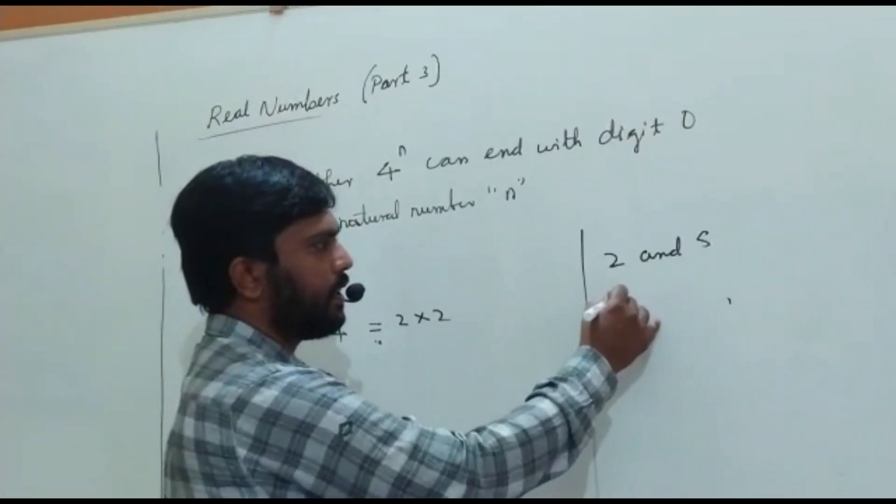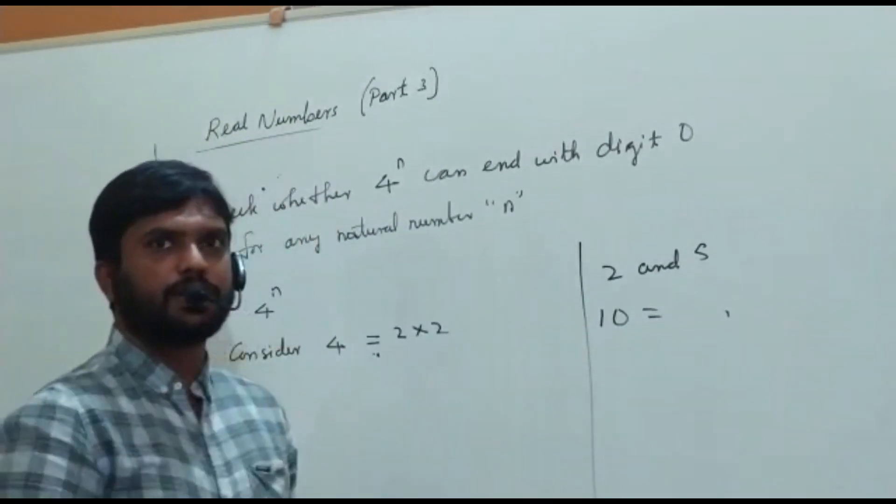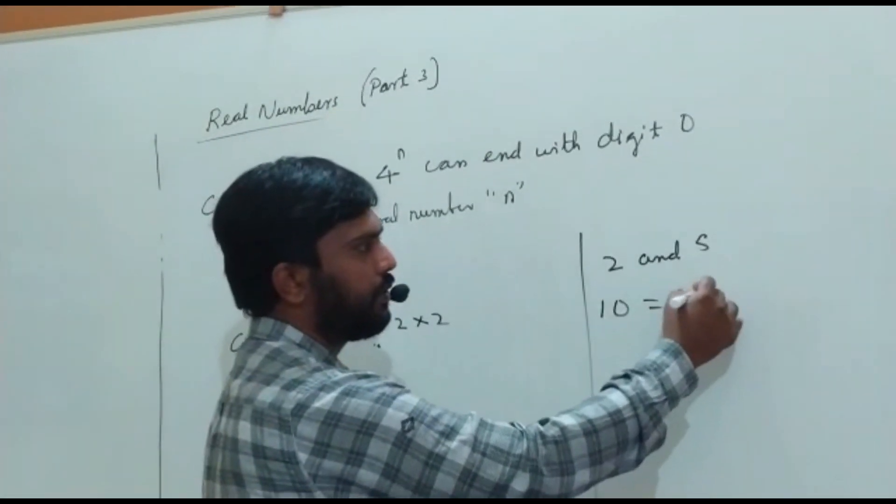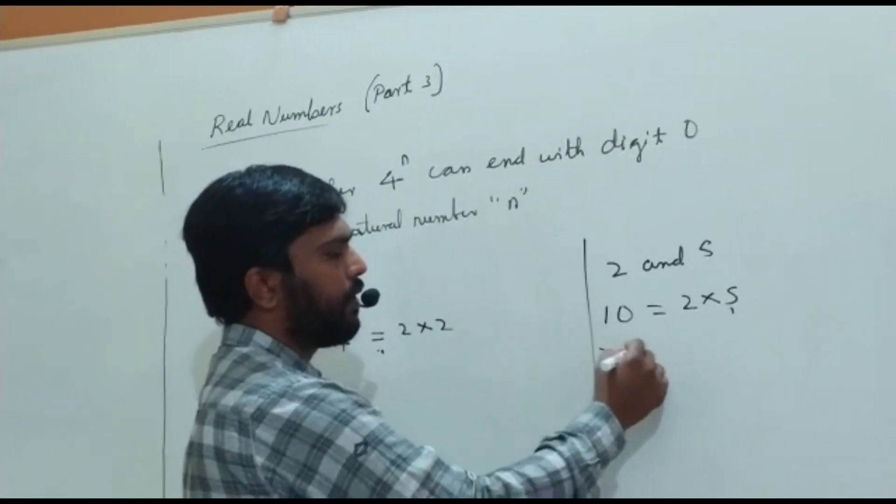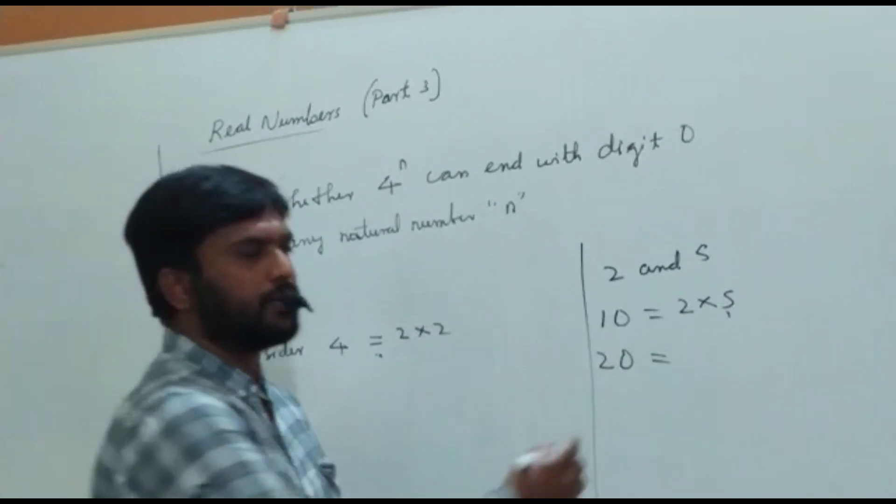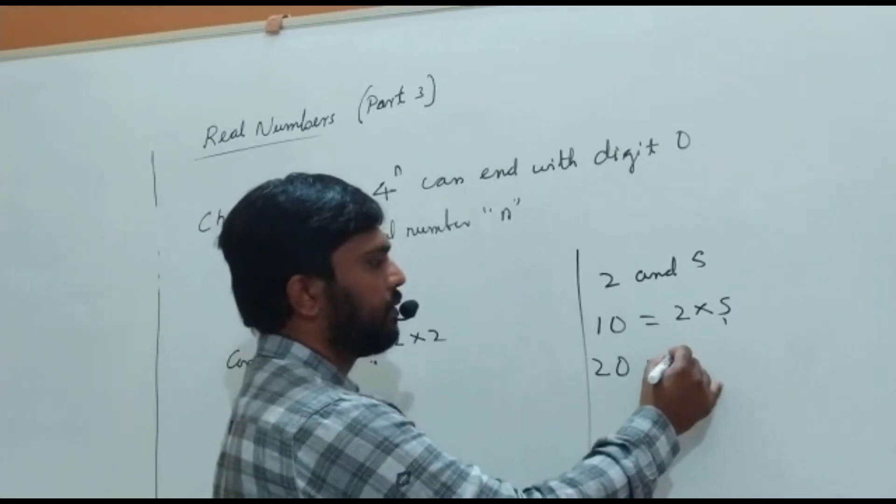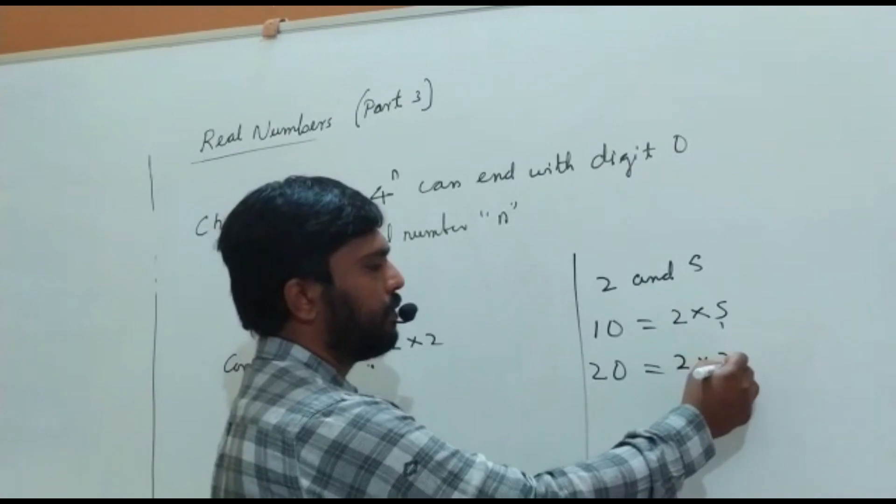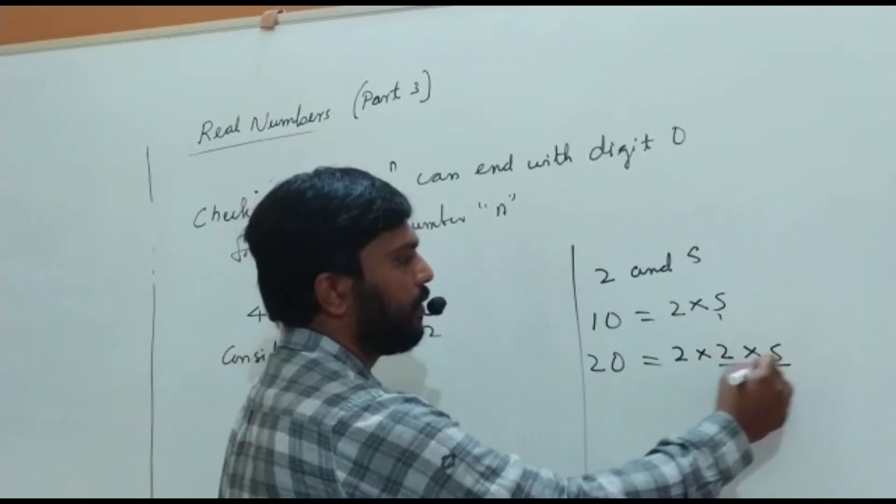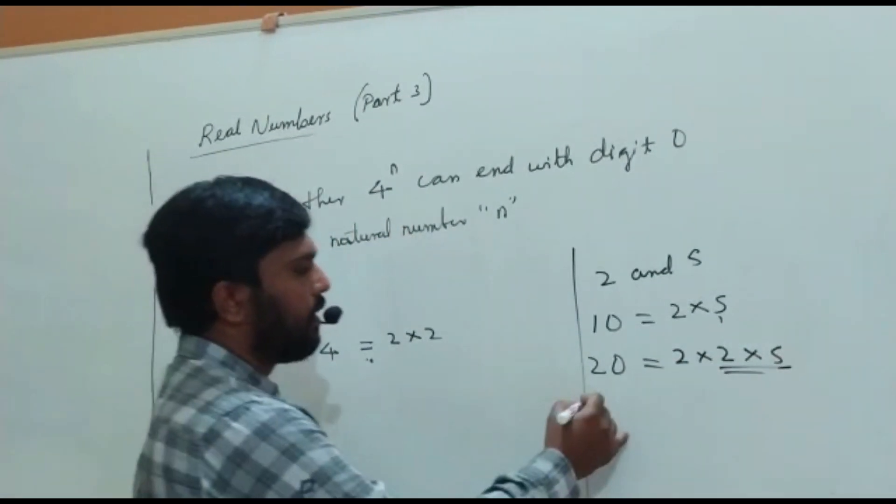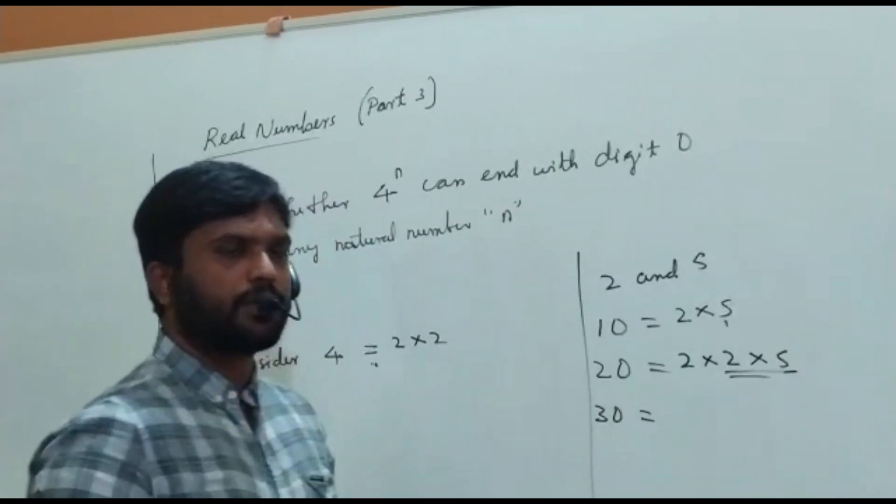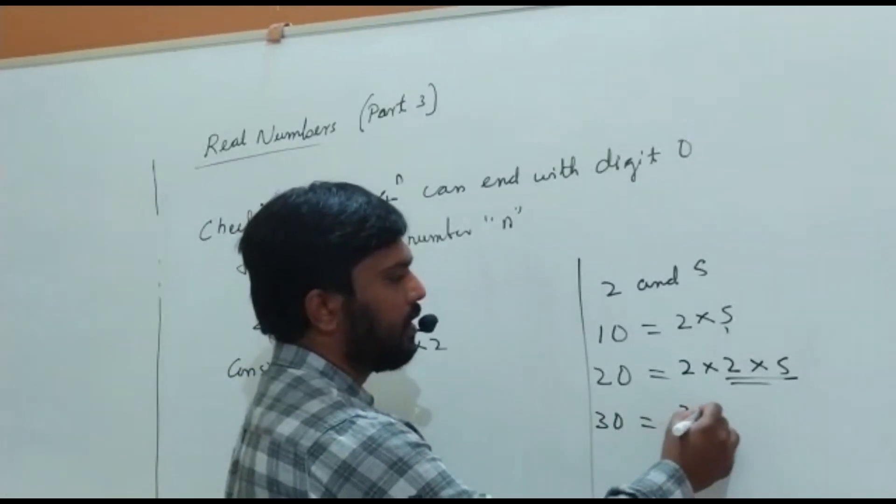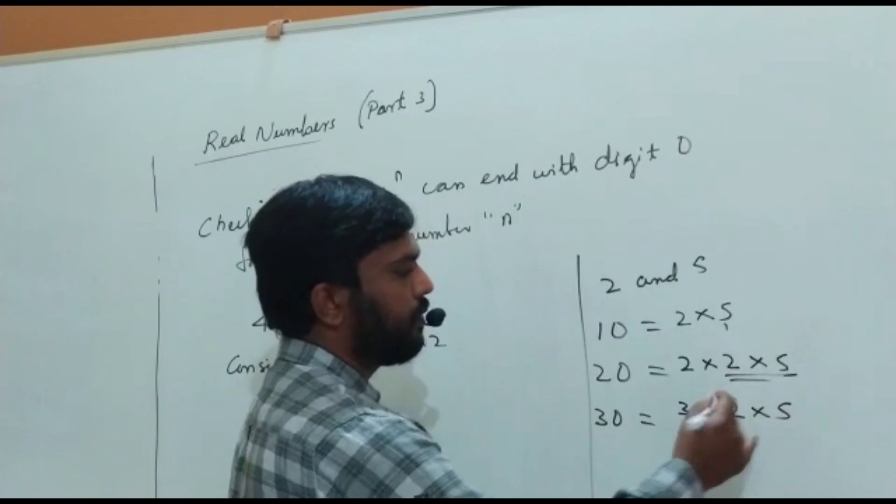For example, 10 is ending with 0, prime factorization 2 into 5. You take 20, ending with 0, prime factorization 2 into 2 into 5. 30 is ending with 0, prime factorization is 3 into 2 into 5.